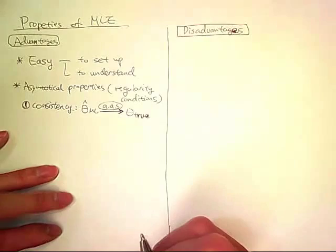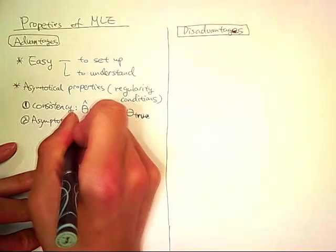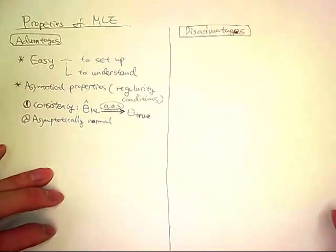Second one, asymptotically normal. This means that the distribution of the estimator is approximately normal, follows a normal distribution as we keep increasing the sample sizes.